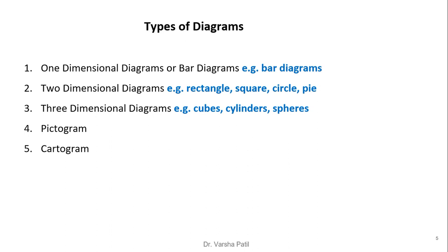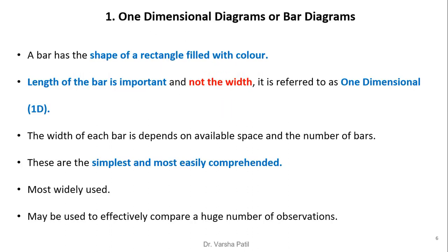Types of diagrams: one-dimensional diagrams, also called bar diagrams; two-dimensional diagrams, which include rectangles, squares, circles, and pie charts; three-dimensional diagrams, which generally consider volume; and pictograms and cartograms.